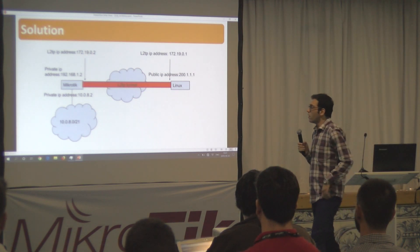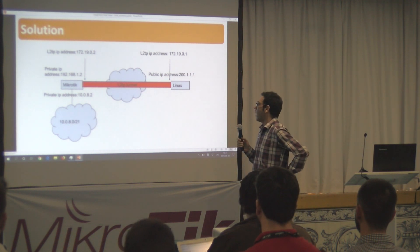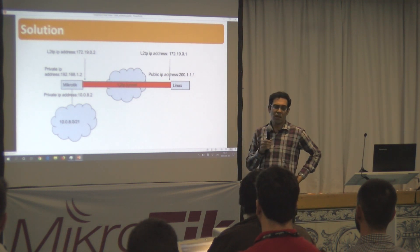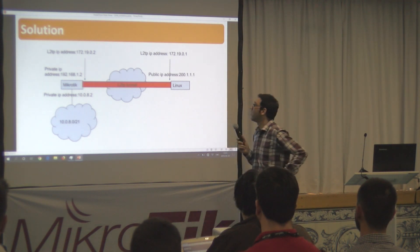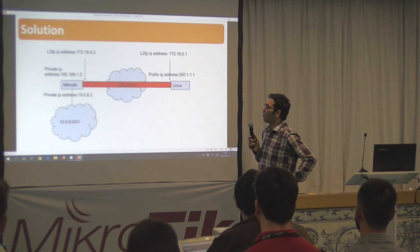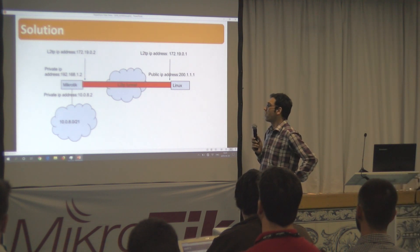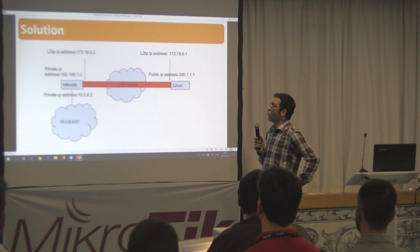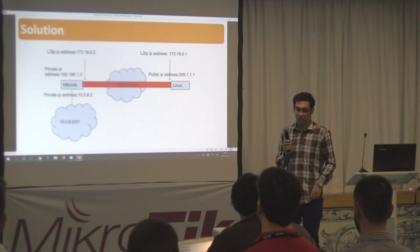This is the situation in detail. On the right side we have our Unix server — in this scenario it is Debian-based with a public IP address. On the left side we have Mikrotik, which has a private IP address. We want to establish an L2TP tunnel between these two, and over this tunnel we want to establish IPsec to encrypt data.